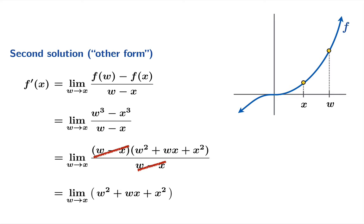Now once again we're going to make our general observation here w is approaching x and x is constant for this calculation so this expression is a quadratic polynomial in the variable w.